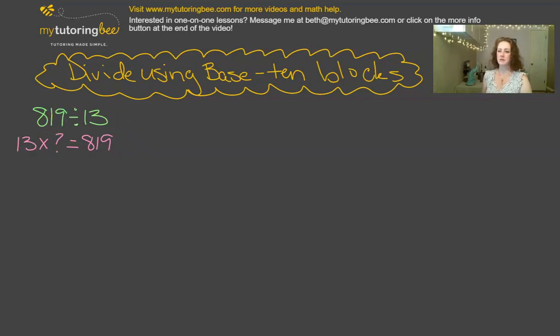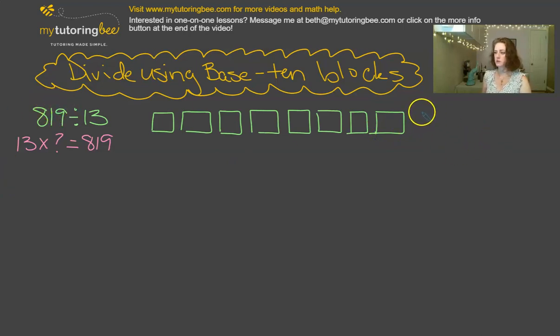Okay, so the first thing that we need to set up is our base-10 blocks, and we're going to start with the 819. So that is what we call our dividend. So we need 800s, that's the blocks, sorry, the flat pieces. 1, 2, 3, 4, 5, 6, 7, 8. Okay, so there's our 800s. We have 1 ten in this number, so that's going to be represented by a stick, and then 9 ones. So we're going to use 9 small dots to represent the ones place.